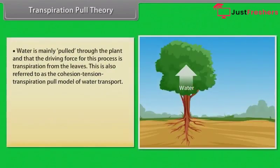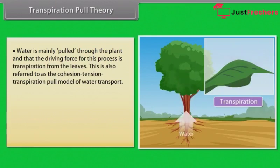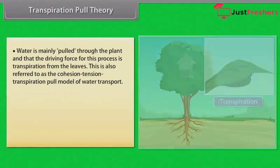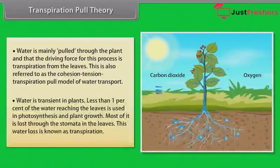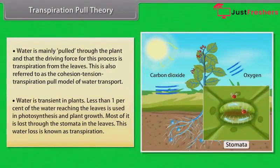In transpiration pull theory, most researchers agree that water is mainly pulled through the plant and that the driving force for this process is transpiration from the leaves. This is also referred to as the cohesion-tension-transpiration pull model of water transport. Less than 1% of the water reaching the leaves is used in photosynthesis and plant growth. Most of it is lost through the stomata in the leaves — this water loss is known as transpiration.